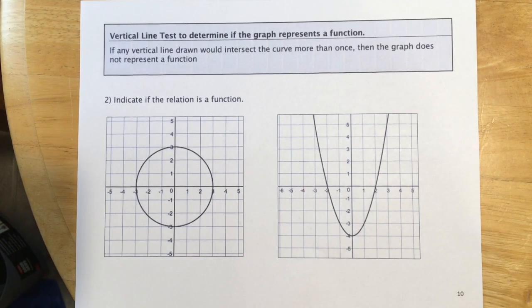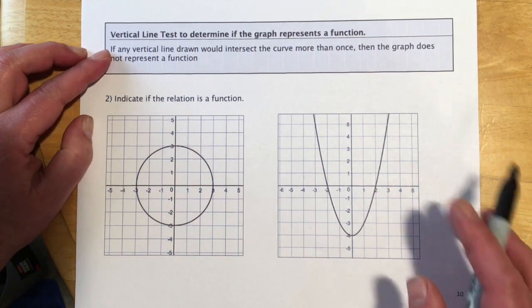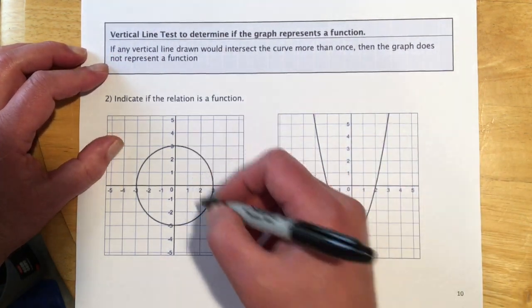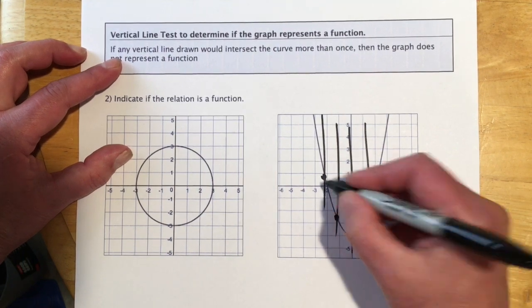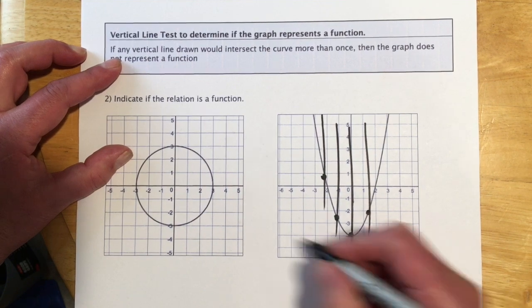Same idea except from a graph. We'll use the vertical line test to determine if something's a function. If any vertical line drawn would intersect the curve more than once, then the graph does not represent a function. Basically, if I can draw a vertical line anywhere I want, and I only hit the graph one time, it's a function. So this would be yes, that one is a function.